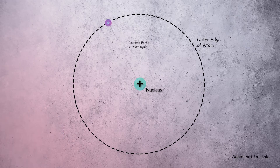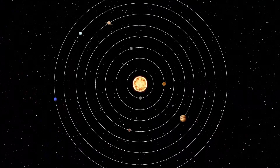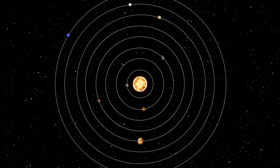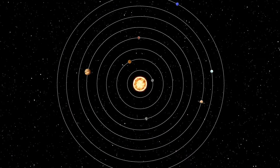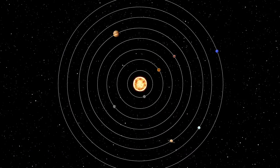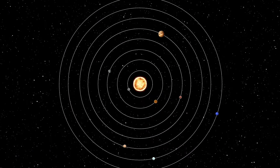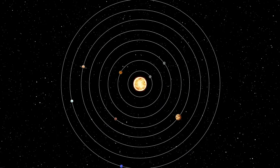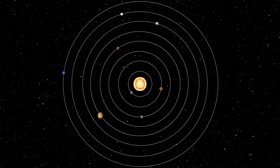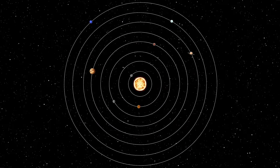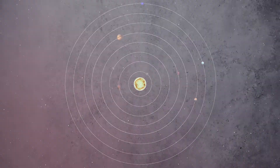To explain how the electrons didn't simply collapse into the nucleus, Rutherford proposed that they simply orbit the atom like planets do around the sun, but he admitted he didn't know how this was possible, and this is regarded as one of the major problems with his planetary model of the atom.